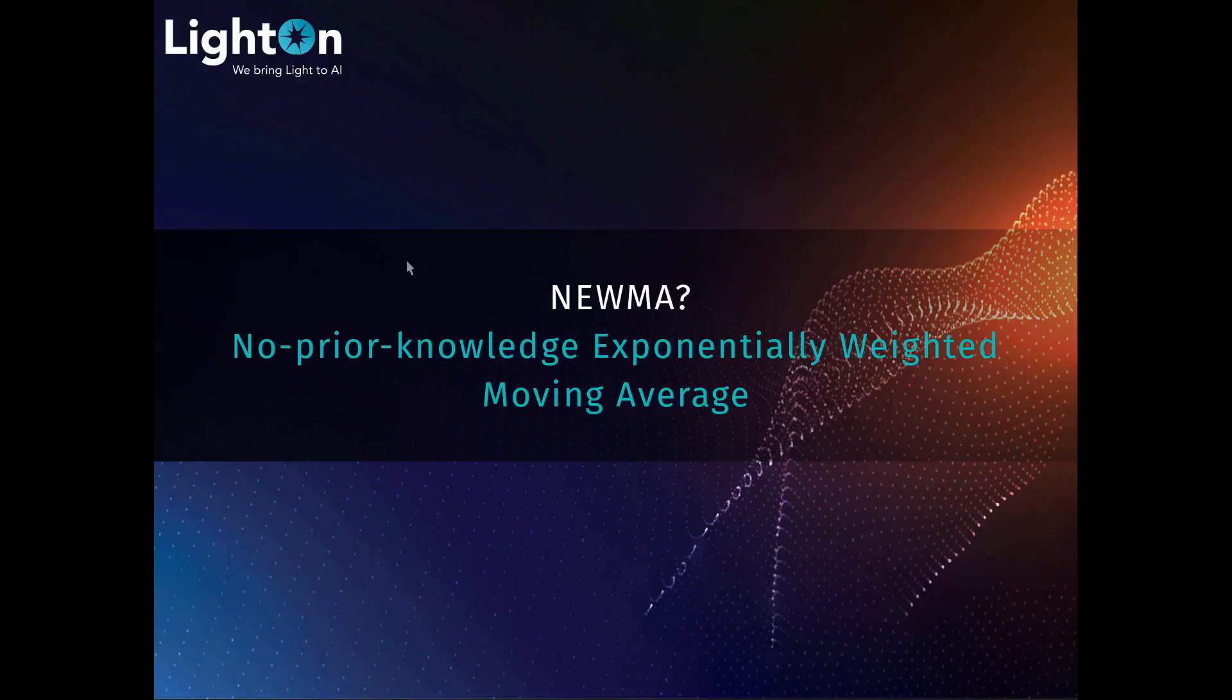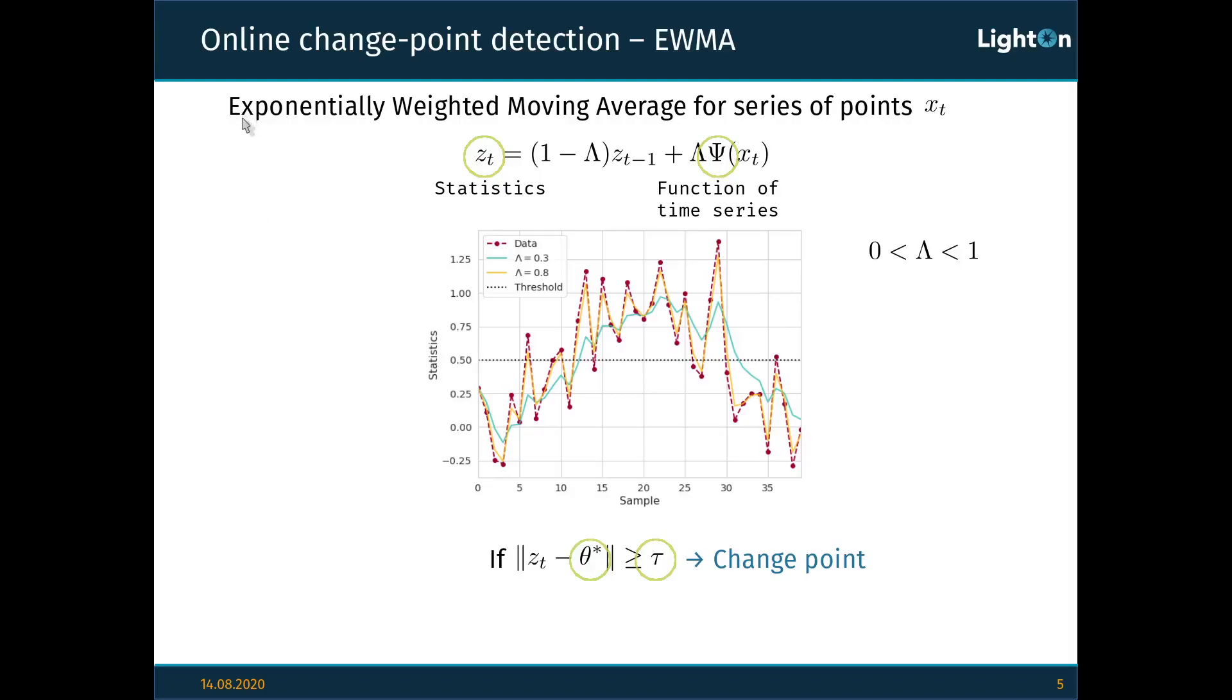But so, what is Pneuma? Pneuma is the No Prior Knowledge Exponentially Weighted Moving Average, so let me explain what it is exactly. Let's start with EWMA, which is an online changepoint detection algorithm. The idea behind EWMA is the following. We have a series of points, xt. In our case, those points will actually be vectors that contain, for example, all the coordinates of all the atoms of a certain molecule that we're studying. And we want to know when some kind of change is happening in this series.